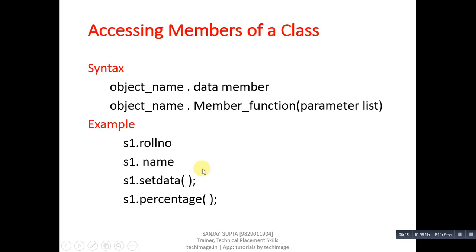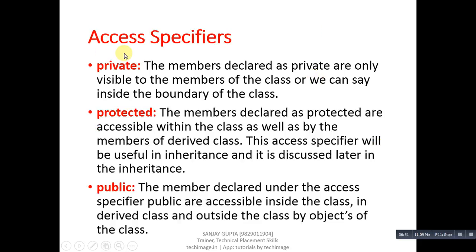Access specifiers are defined as follows. 'Private': members declared as private are only visible within the class boundary. 'Protected': members declared as protected are accessible within the class as well as by members of a derived class — this will be used in inheritance, discussed in later tutorials. 'Public': members declared as public are accessible inside the class, in a derived class, and outside the class by objects of the class.